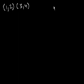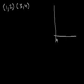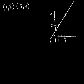And I want to figure out the equation of the line through these points, so let's at least figure out what that line looks like. So 1, 2 is here, and 3, 4 is here. And if I want to draw a line through them, it'll look something like that.